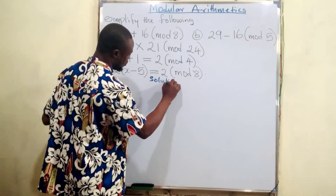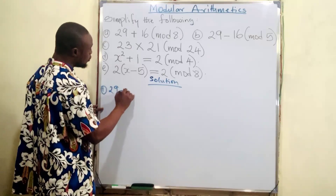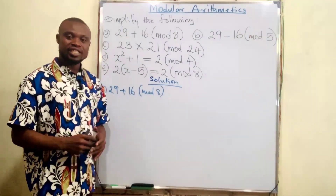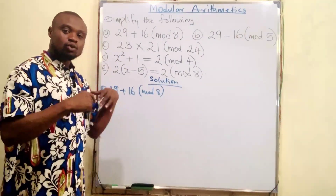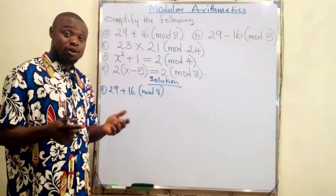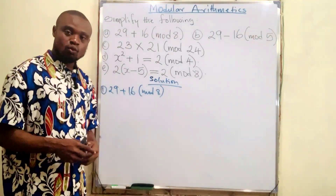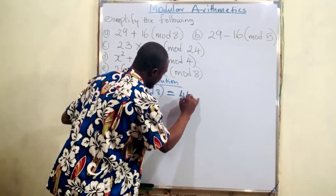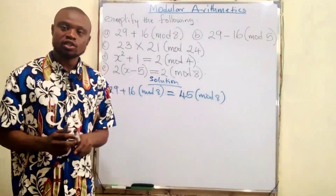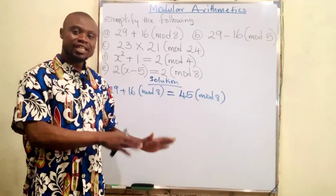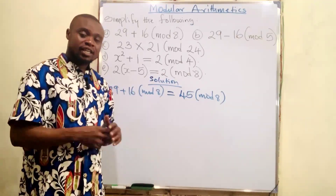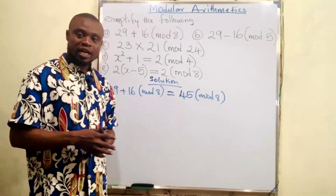Solution one: 29 plus 16 mod 8. The question is what is 29 plus 16 in mode eight? Nine plus six is 15 — write five and carry one. Two plus one is three, plus that carried one is four. So 29 plus 16 equals 45. This is now 45 mode eight.